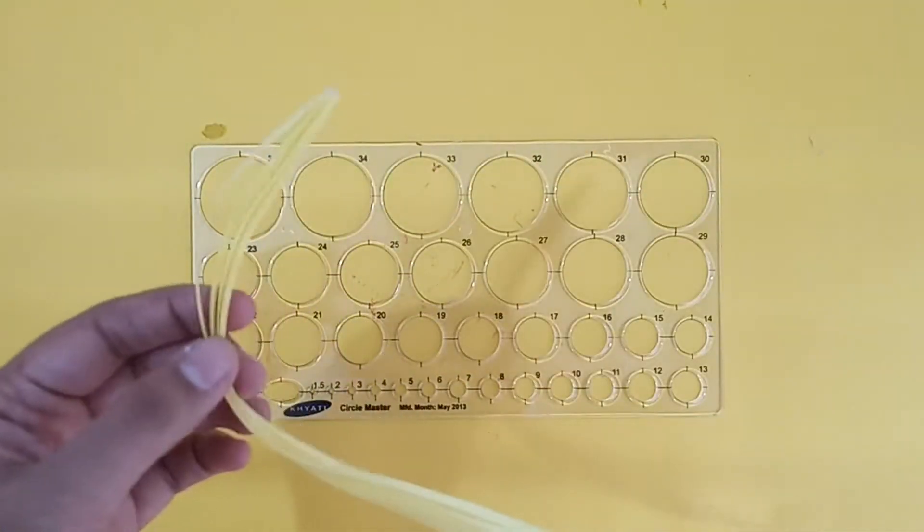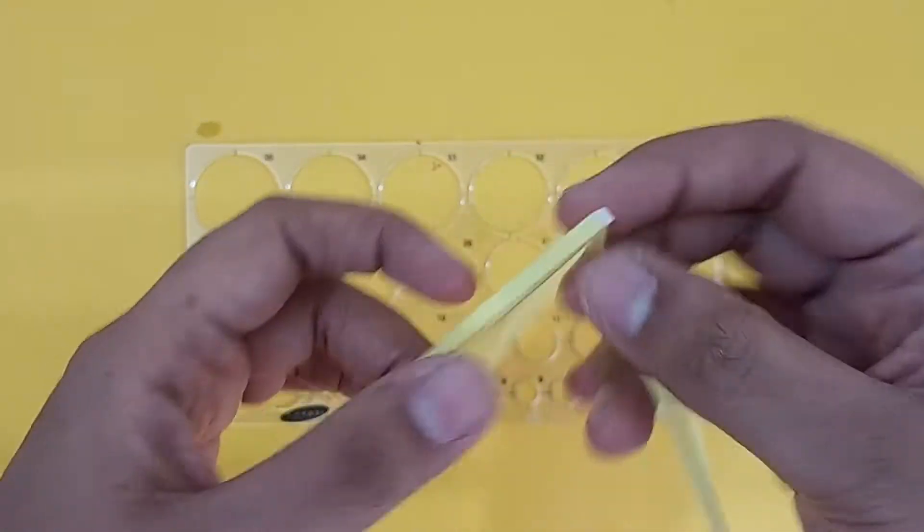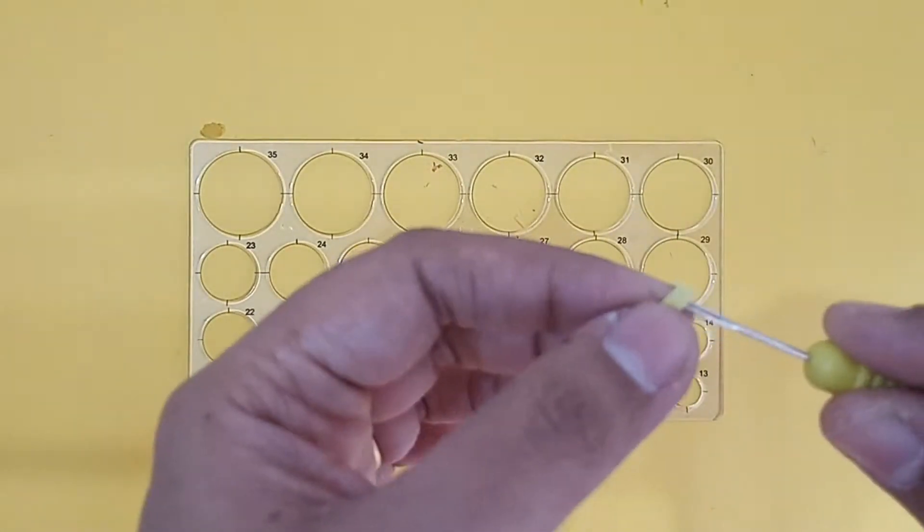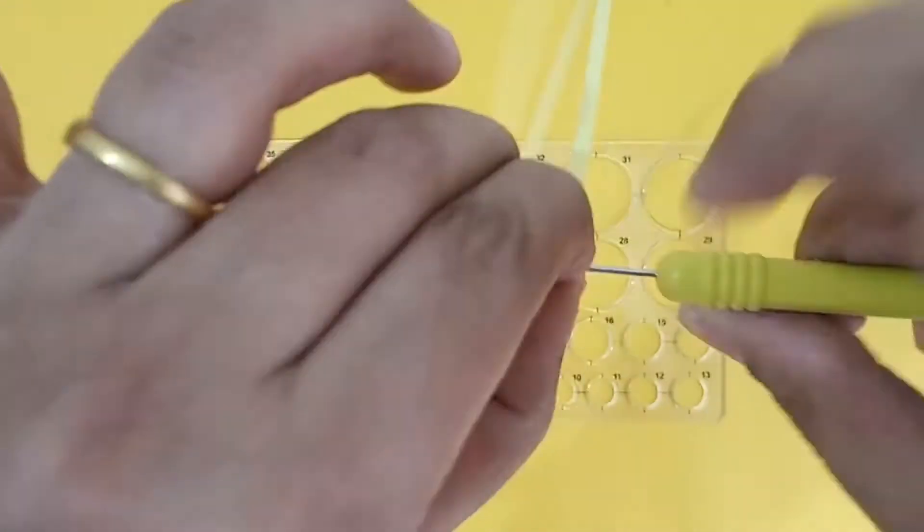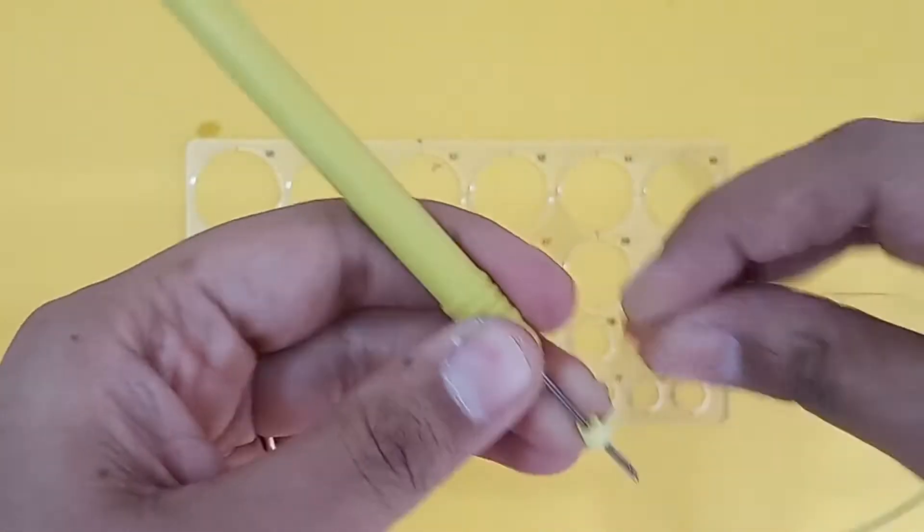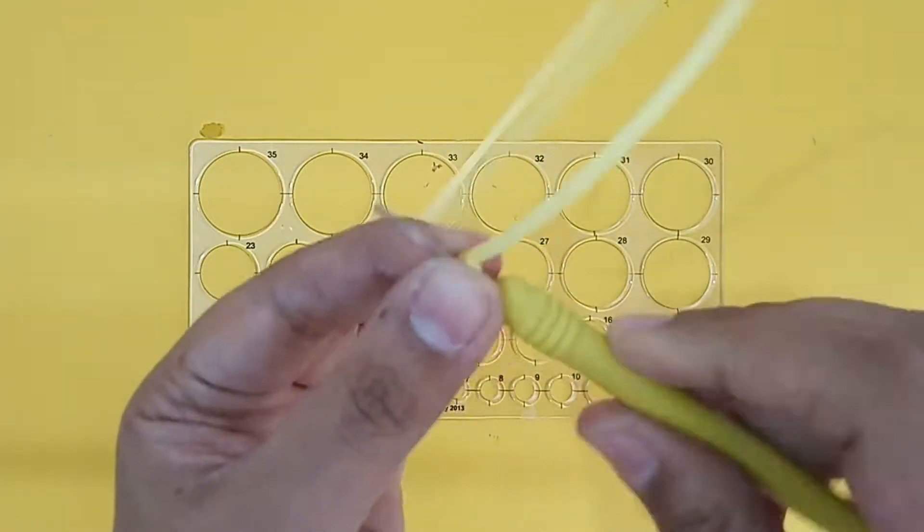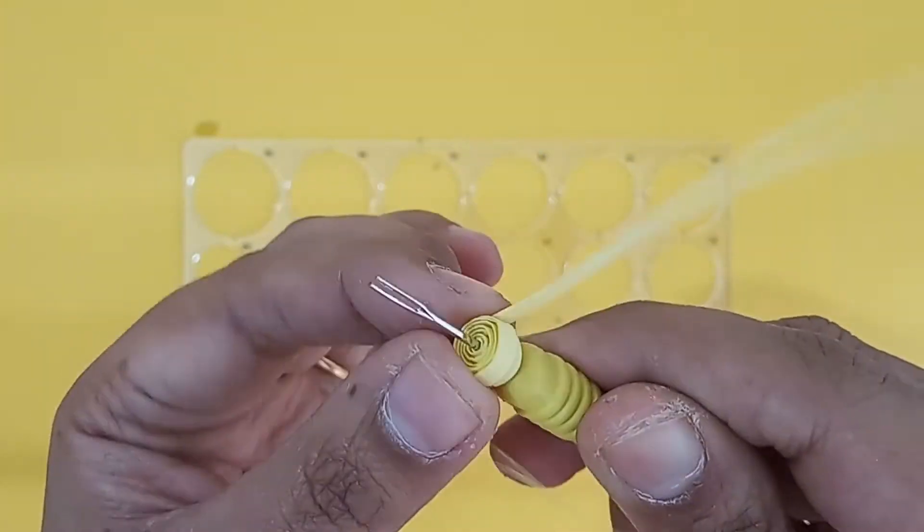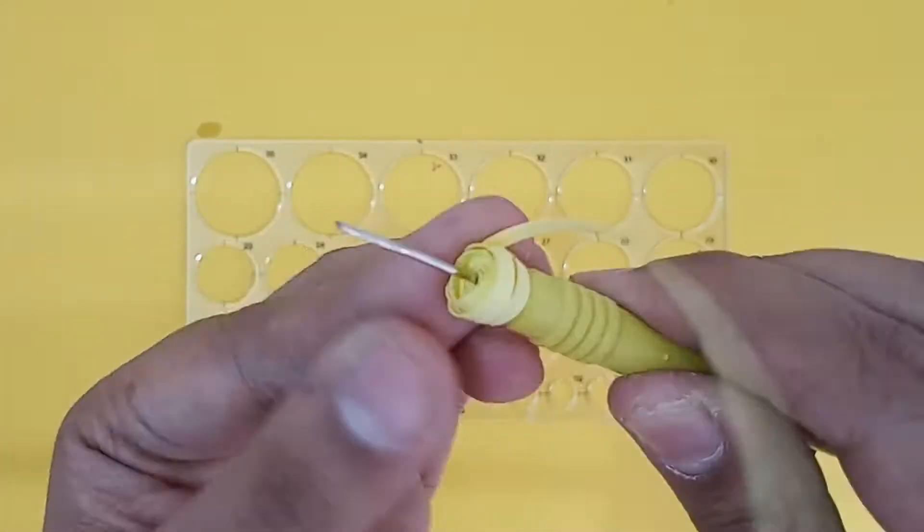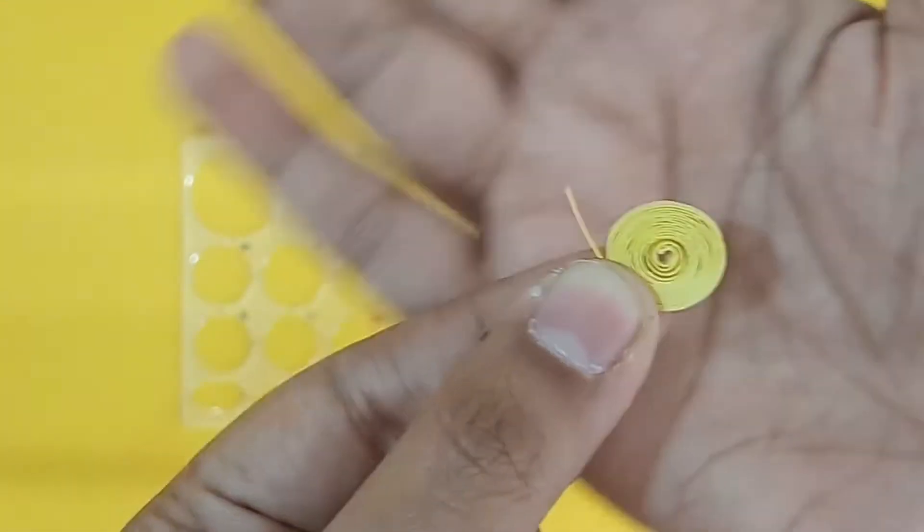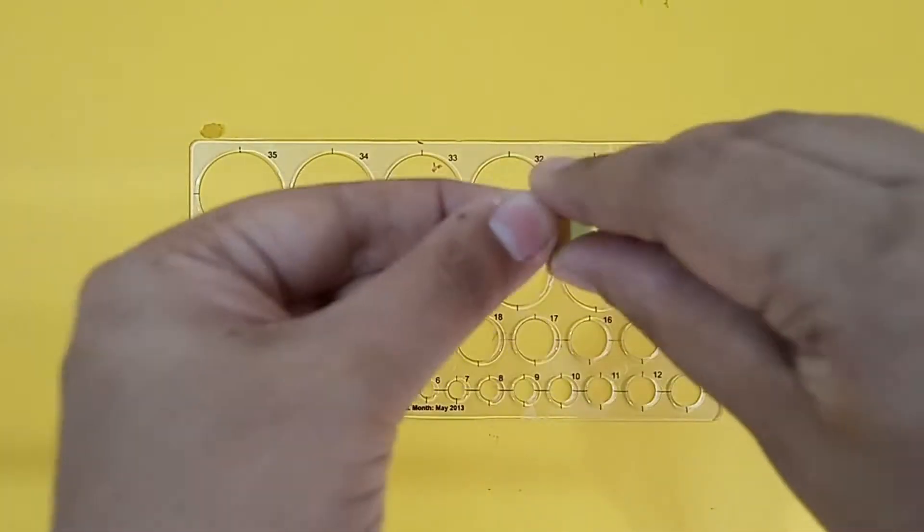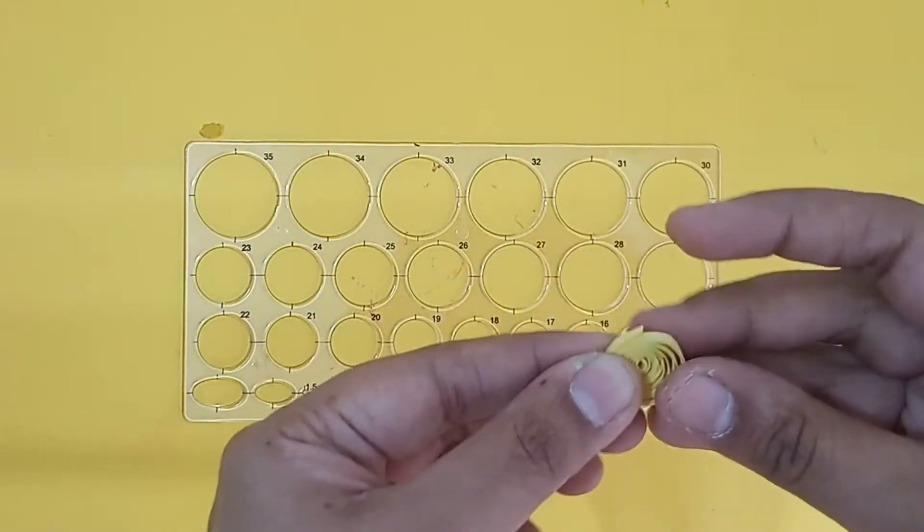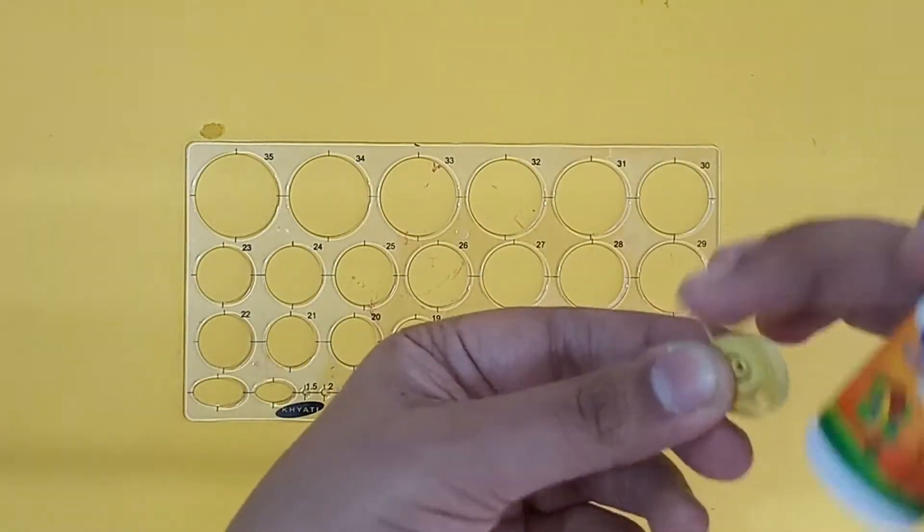First, take a strip, put it in the quilling tool and just rotate it in the circular manner. This is the quilled circle. Then put the circle in the circle stencil. Stick the end with Febicol and press it to make a drop shape.